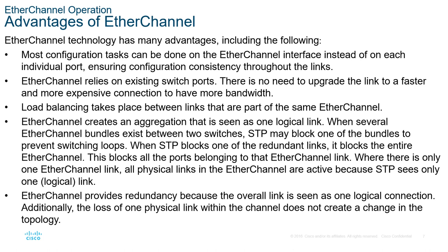Advantages: Most configuration tasks can be done on the EtherChannel interface instead of on each individual port, ensuring configuration consistency throughout the links. EtherChannel relies on existing switch ports — there is no need to upgrade the link to a faster and more expensive connection to have more bandwidth. Load balancing takes place between links that are part of the same EtherChannel. EtherChannel creates an aggregation that is seen as one logical link. When several EtherChannel bundles exist between two switches, STP may block one of the bundles to prevent switching loops. When STP blocks one of the redundant links, it blocks the entire EtherChannel, blocking all ports belonging to that EtherChannel link. Where there is only one EtherChannel link, all physical links in the EtherChannel are active because STP sees only one logical link. EtherChannel provides redundancy because the overall link is seen as one logical connection, and the loss of one physical link within the channel does not create a change in the topology.